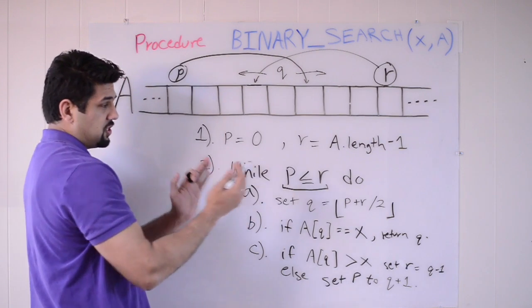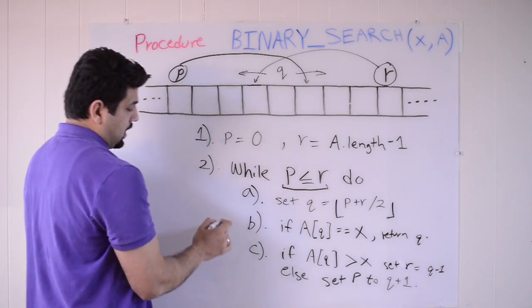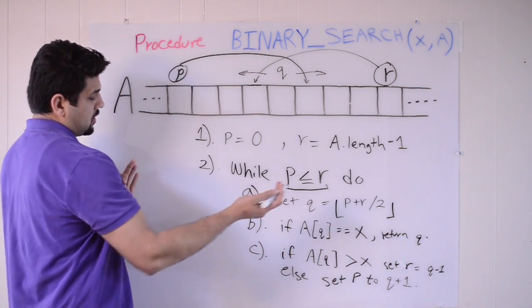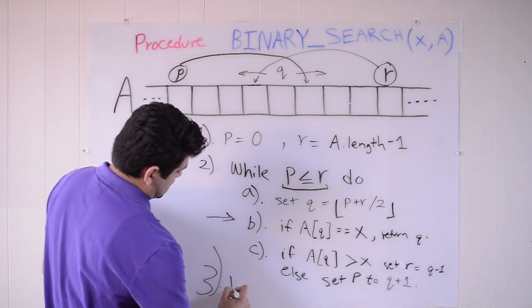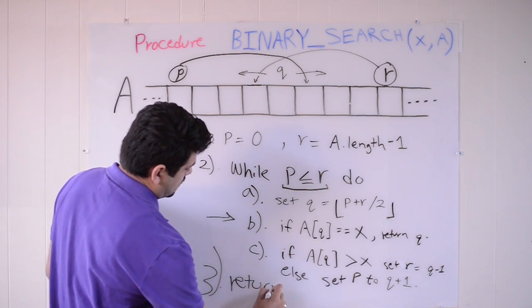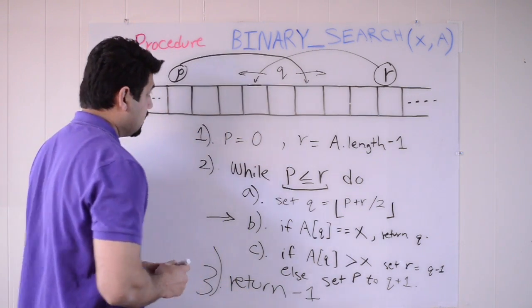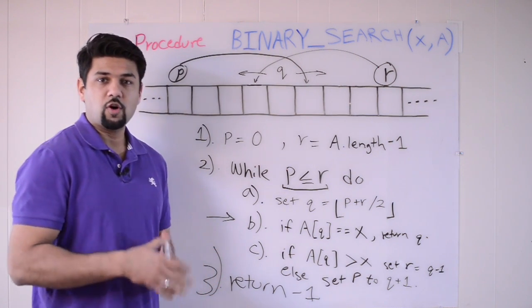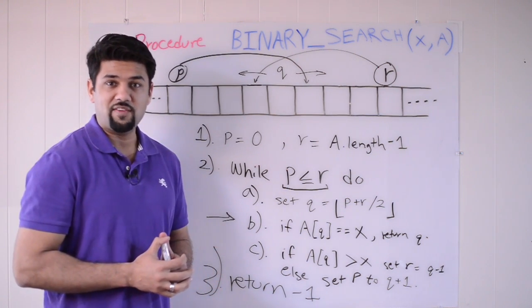And it's going to continue to narrow in like this as this loop is running. The values are going to be changing, getting closer to what we are searching for. And eventually, this step b will find x if it is in this array. Otherwise, step 3 right here is going to happen. And what that is, is it's just going to return negative 1. We were not able to find the value that we are searching for in this array. So hopefully this makes sense. Let's head over to the screencast and implement this in Java.